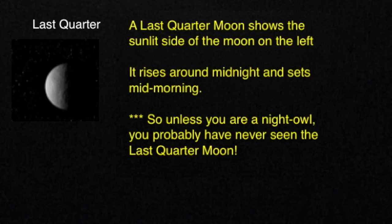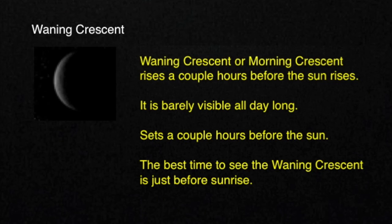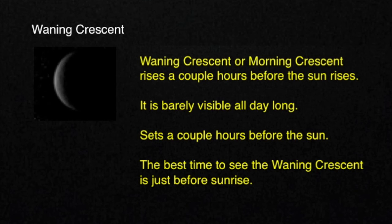The moon continues to wane until it finally reaches the waning crescent stage. The waning crescent, or morning crescent, rises a couple hours before the Sun rises. It is barely visible all day long and sets a couple hours before the Sun. The best time to see the waning crescent is just before sunrise.